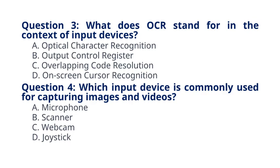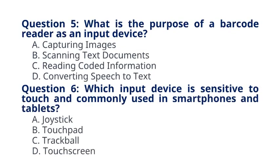Question 4: Which input device is commonly used for capturing images and videos? Question 5: What is the purpose of a barcode reader as an input device? A. Capturing images. B. Scanning text documents. C. Reading coded information. D. Converting speech to text. The correct answer to question 5 is option C: Reading coded information. Barcode readers scan and interpret coded information from barcodes.